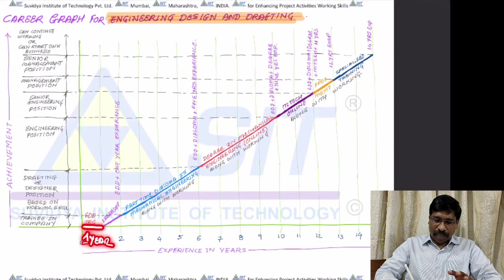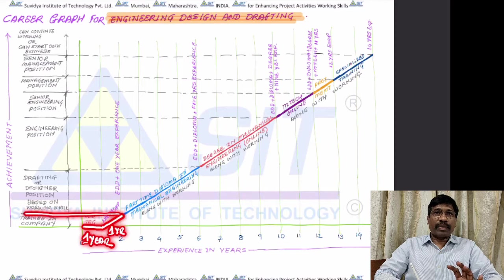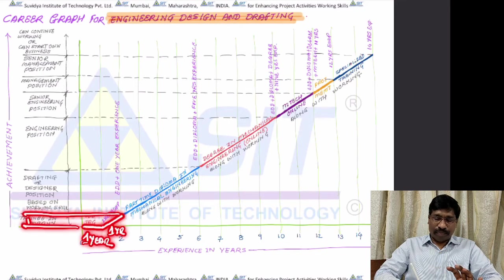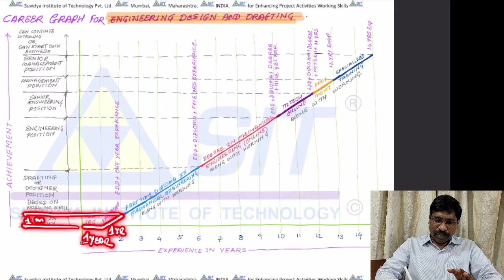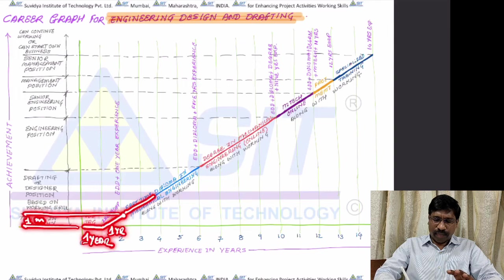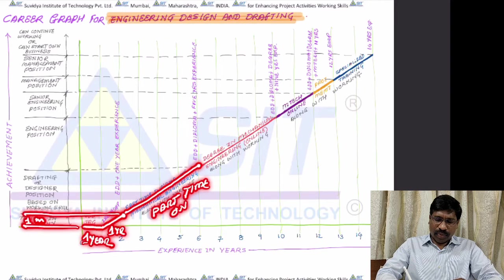After the apprenticeship, participants are encouraged to do a part-time or online diploma. After completion, when that certificate is submitted to the company, they will consider it as an engineering position.